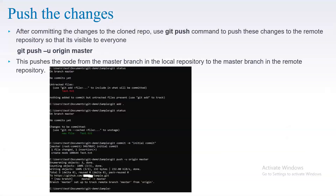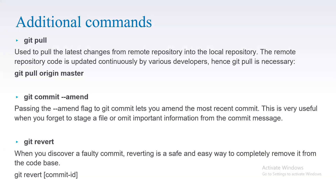That's about pushing. Now there are a few additional commands. First is 'git pull', which is used to pull the latest changes from the remote repository into the local repository. The remote repository is updated continuously by various developers, so git pull is necessary. For example, if you pulled the code yesterday and today someone else made changes and committed them, those changes won't be in your local repository. To get them, run 'git pull origin master'.